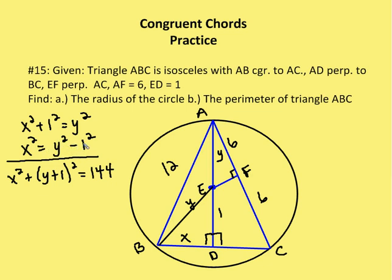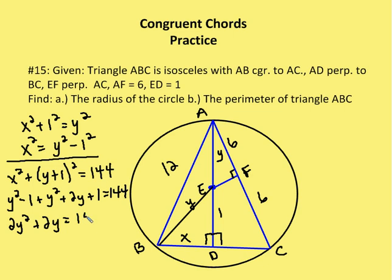Now I substitute Y² − 1 for X² and solve for Y. So I have Y² − 1 + (Y + 1)² = 144. Expanding (Y + 1)² as Y² + 2Y + 1, I get Y² − 1 + Y² + 2Y + 1 = 144, which simplifies to 2Y² + 2Y = 144. Dividing by 2 gives Y² + Y = 72, and subtracting 72 yields Y² + Y − 72 = 0.